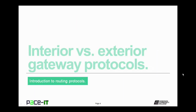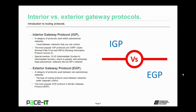Let's begin with a comparison between interior and exterior gateway protocols. Interior gateway protocols, or IGPs, are a category of protocols used within autonomous networks — networks that you control, or that are under the control of a single organization. The most popular IGP protocols are OSPF, Open Shortest Path First, and RIP version 2, Routing Information Protocol version 2. There is a special mention here: ISIS, Intermediate System to Intermediate System, which is popular with extremely large autonomous networks, like an ISP's network.